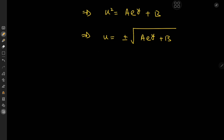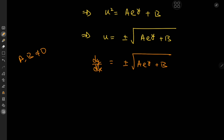Recall that we defined dy/dx as u, so we have another separable differential equation: dy/dx = ±√(a·e^y + b). We're dealing with the interesting case of a and b both being non-zero, because letting either equal zero would lead to a very boring solution, and we are quite averse to boring math here.